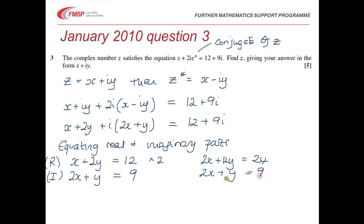And now we can subtract those equations to end up with 3y equals 15. So that means y equals 5. So x must be equal to 2. And the important thing, then, is that that means our complex number z must be equal to 2 plus 5i.